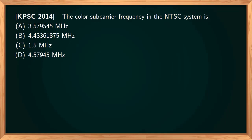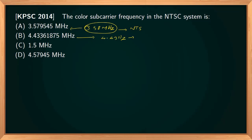The color subcarrier frequency in the NTSC system is 3.58 MHz — more precisely 3.579545 MHz. For the PAL system (Phase Alternation Line), the color subcarrier frequency is 4.43 MHz — more precisely 4.43361875 MHz.